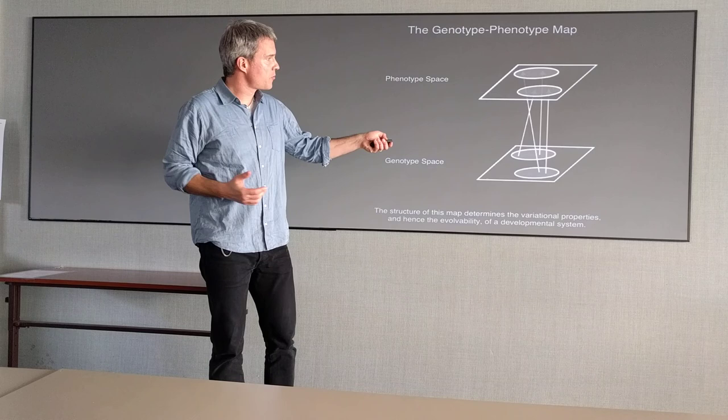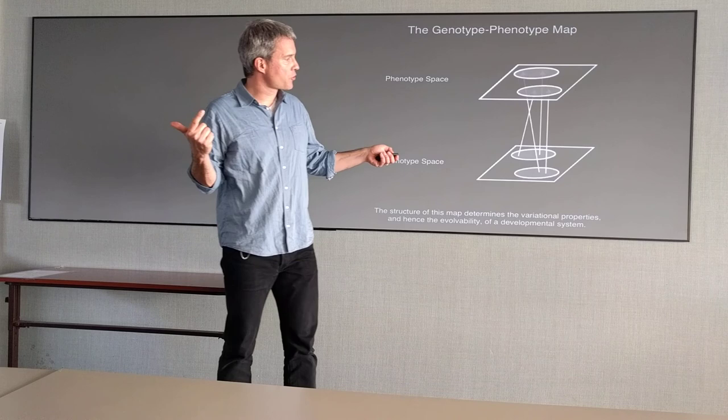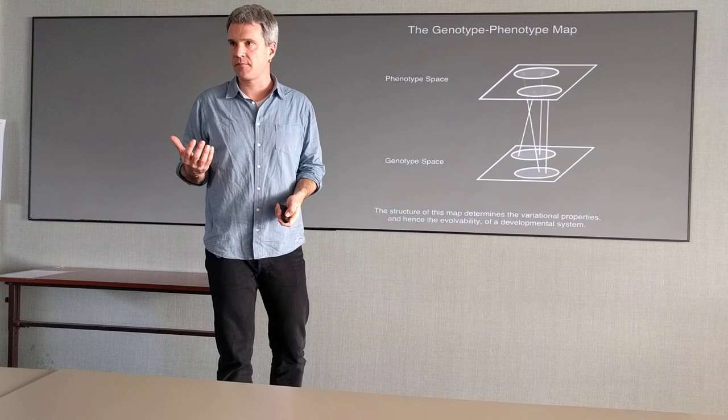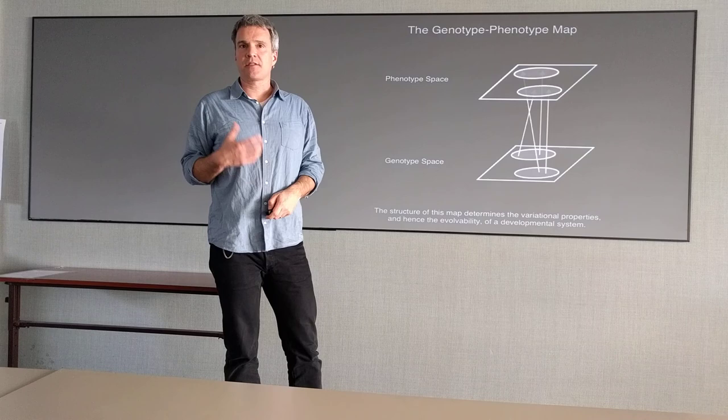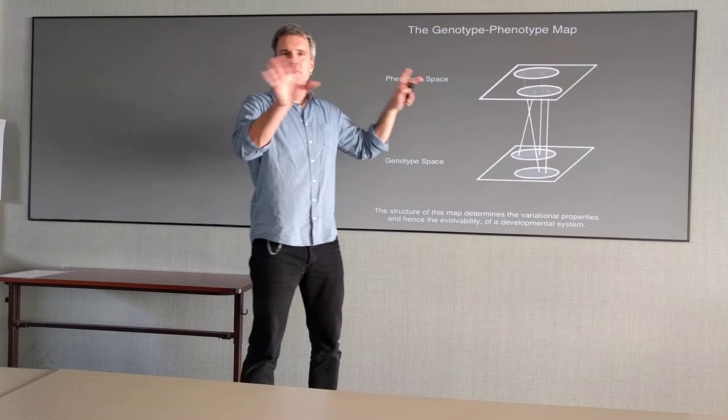The map is very complicated, and it's degenerate in two ways. First, you have the same genotype in different environments can give you different phenotypes - that's phenotypic plasticity. Different genotypes often give you the same phenotype - that's robustness. So there's environmental influences that go in here, but I want you to forget about this for the moment.